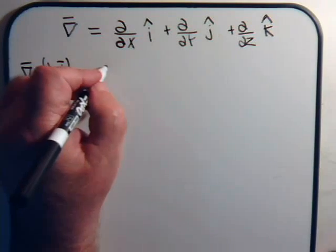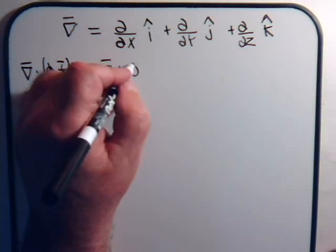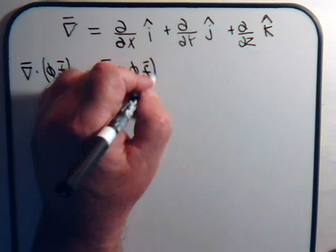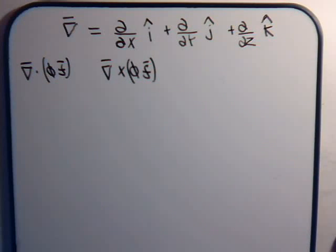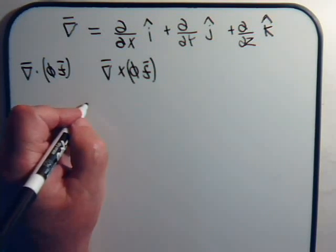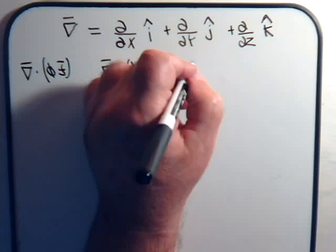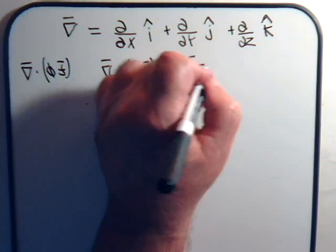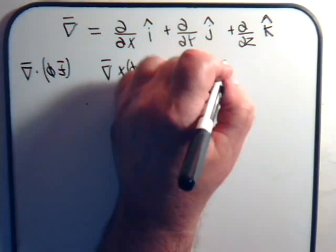Or perhaps we would have the cross product. Like this. Now, if you've watched the introductory videos, you know that if our vector f looks like this, say, has these components.